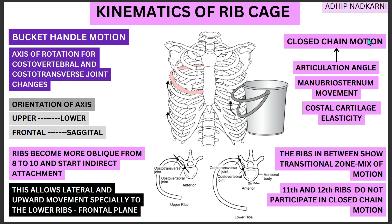Now that we understand the closed chain motion, let's move on to the bucket handle movement. If you look at the kinematics of the ribcage, it has two major movements: the bucket handle motion and the pump handle motion. Simply put, the bucket handle movement is the lateral and upward movement of your lower ribs — an outward movement of your lower ribs. To understand this movement in detail, first we'll have to look at the axis.